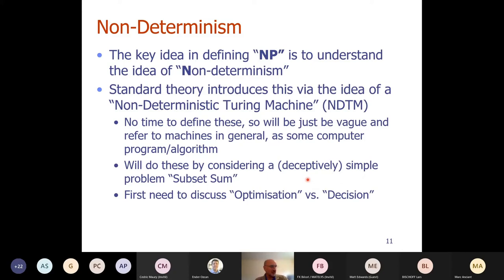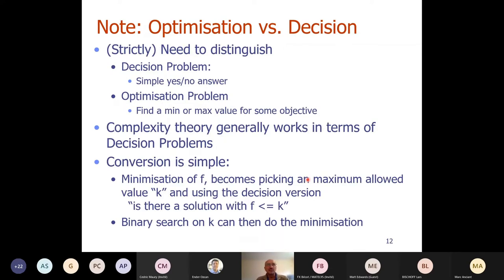A more deceptive problem is the assignment problem: assigning agents to tasks in a one-to-one assignment. The solution space is n-factorial — it looks hard. If n is a thousand, a thousand factorial is far too many to enumerate. But the Hungarian algorithm solves this problem exactly in polynomial time. Even though it looks like a difficult optimisation problem, it's actually in P — not hard in terms of requiring exponential runtime. The whole theory of NP gives better justification for 'it's hard' than just 'the search space is large'.